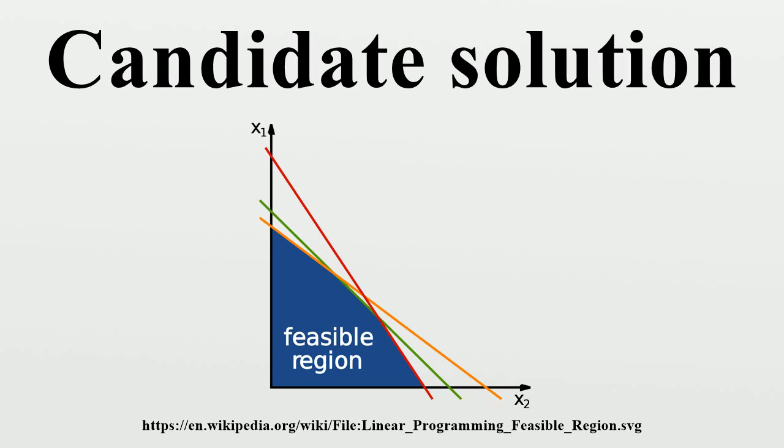The space of all candidate solutions before any feasible points have been excluded is called the feasible region, feasible set, search space, or solution space. This is the set of all possible solutions that satisfy the problem's constraints.